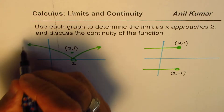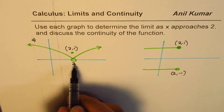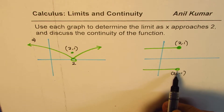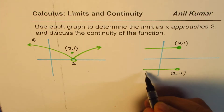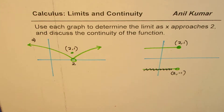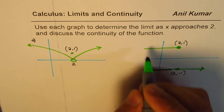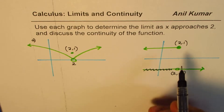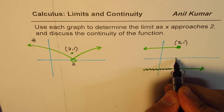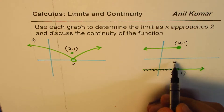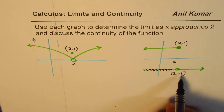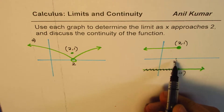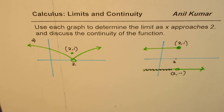There are two graphs here. In Graph A, at x equals 2 we have a hole and the value of the function is 1. The other is a step function — on the left side of 2 it is positive 1, and on the right side of 2 it is negative 1. Positive 1 is included at x equals 2. That is how these two functions are defined.